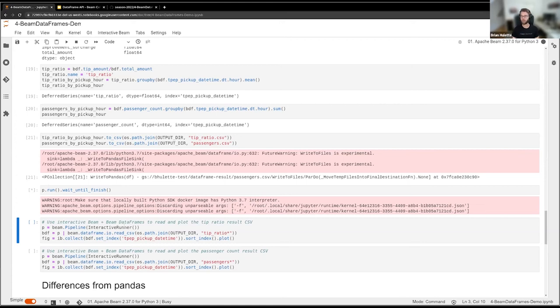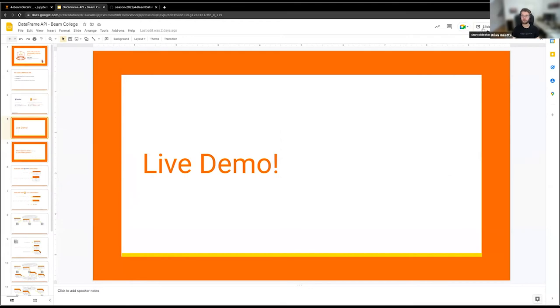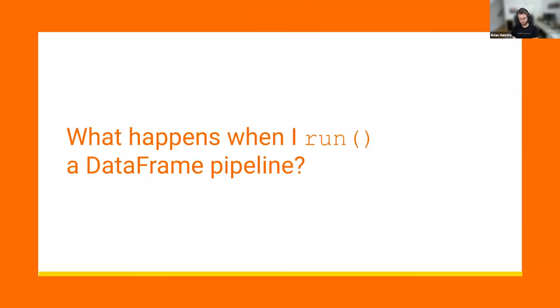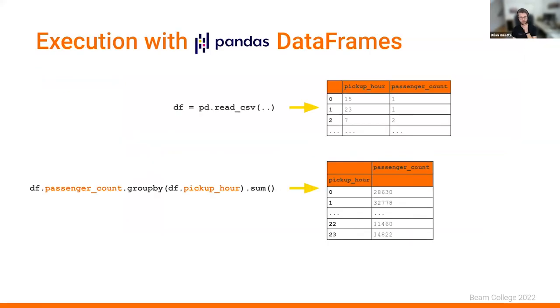While that's running, I want to talk about what's going on under the hood — specifically what happens when you call run on a pipeline built with the DataFrame API. First, to establish some visual language, let's look at what happens with pandas. When you call pandas read_csv, it gives you a DataFrame — an in-memory object. Let's say our CSV has two columns: pickup_hour and passenger_count. The DataFrame has those two columns with all the data, plus an index associated with it.